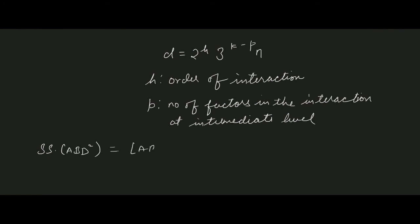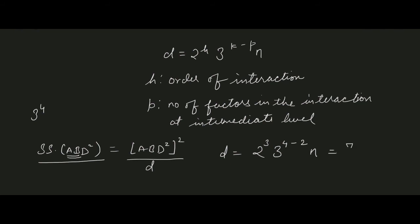For example, to find the sum of squares for ABD² in a 3⁴ design, the divisor D = 2^h × 3^(k-p) × n. Here h = 3 because it is a 3-factor interaction, so 2³ = 8. It is a 3⁴ design so k = 4, and there are two factors at intermediate level (A and B), so p = 2. Thus D = 2³ × 3^(4-2) × n = 8 × 9 × n = 72n.